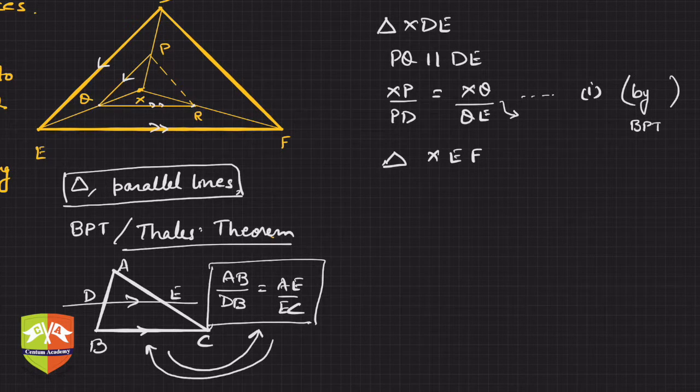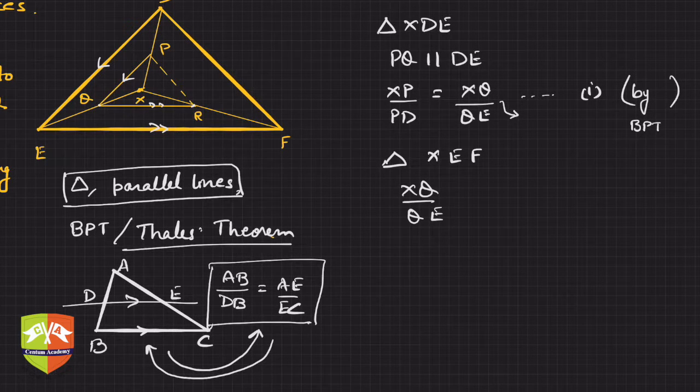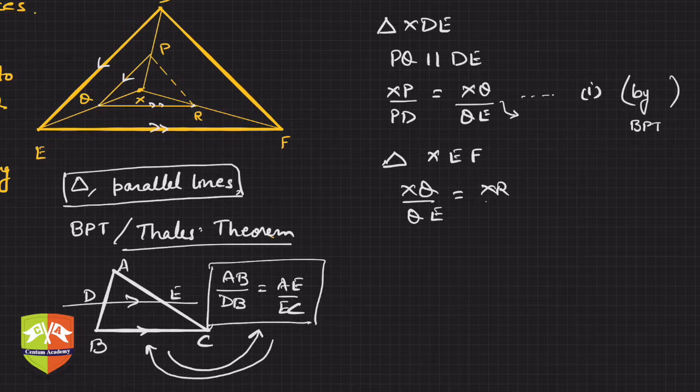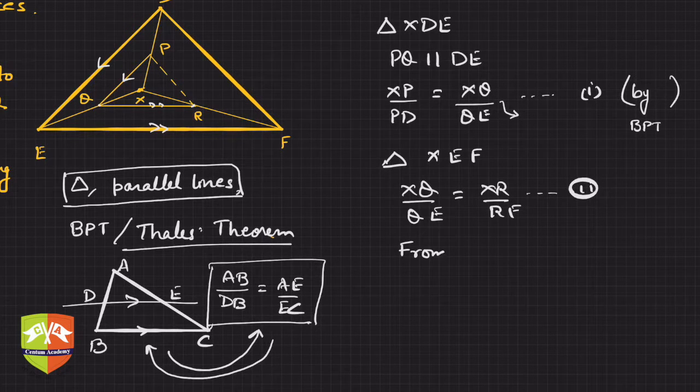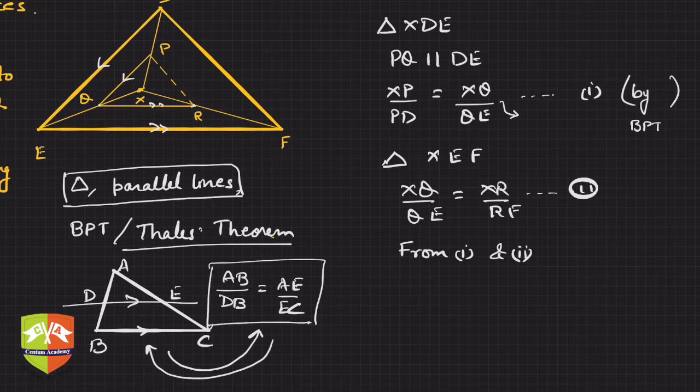So again if you see, in this triangle, XQ upon QE will be equal to XR upon RF. This is equation two. So you can now write from one and two, from one and two, what do we get?